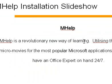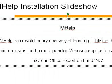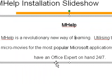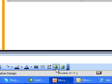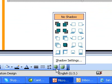To add or remove a shadow for all texts in a text box, select the text box that has the text you want to change. On the drawing toolbar, click Shadow Style and do one of the following.